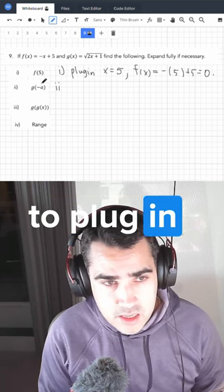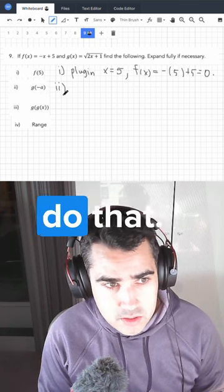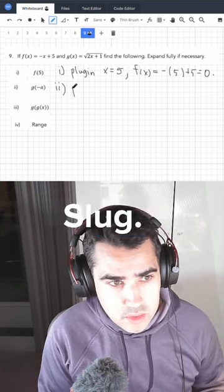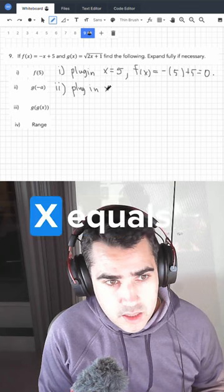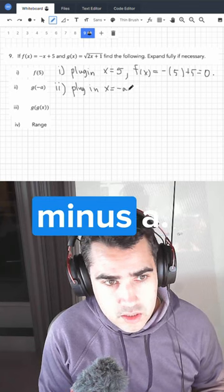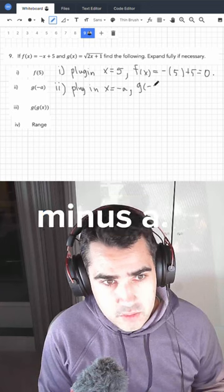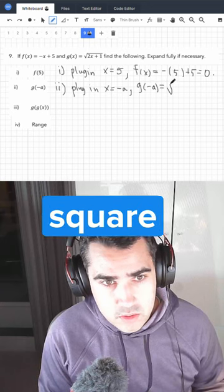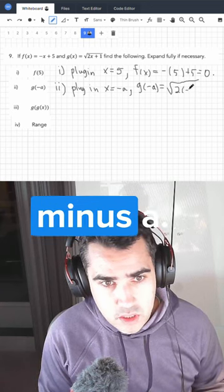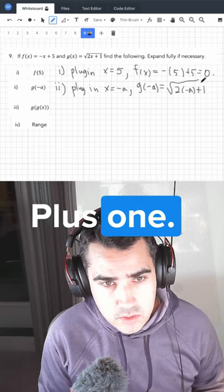Number two, we have to plug in minus a. So let's do that. We're going to plug in x equals minus a. So g of minus a is equal to the square root of 2 minus a plus 1.